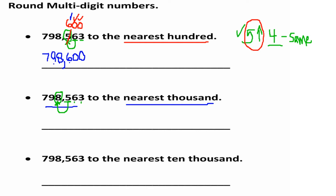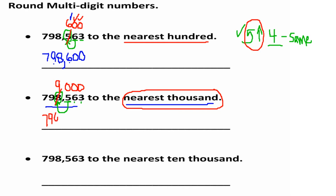Since it's 5 or more, we're going to round up. We round the 8 in the thousands place up by one, making it 9. All smaller values — hundreds, tens, ones — change to zero because we're only concentrating on rounding to the nearest thousand. The rewritten number is seven hundred ninety-nine thousand.